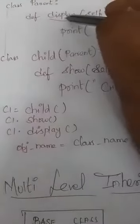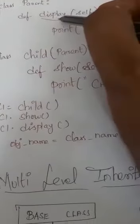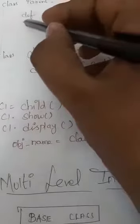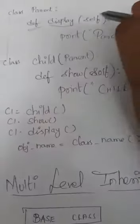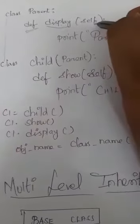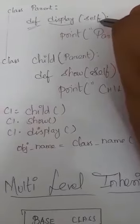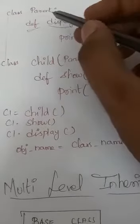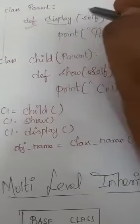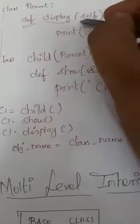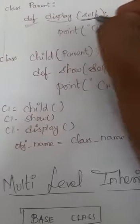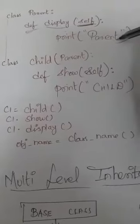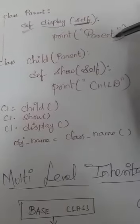How to declare a method in Python? Python methods can be declared with the help of the def keyword. As I mentioned yesterday while teaching classes and objects, a method which is declared under the class should have an argument called self. Inside that, what I am doing is I am just printing 'parent'.